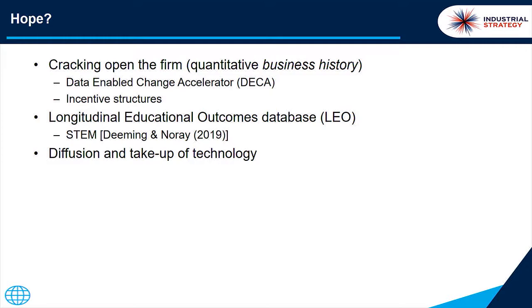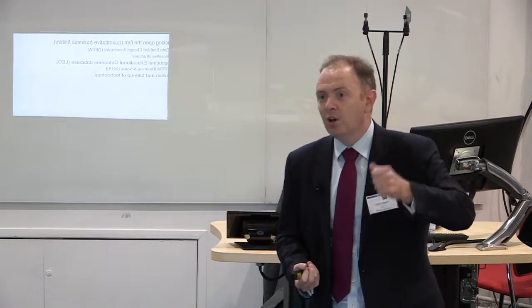This gives us an opportunity to start cracking open what's actually happening at the level of the firm. The first area is something called a Data-Enabled Change Accelerator — it sounds awful, but what it is is HMRC's business-level data: tax records of five million businesses. We're able to link that and work out what actually determines growth. Our prior was that firm-level growth would be largely random — you wouldn't be able to pick winners. We were wrong. When you run the algorithms on it you can find patterns, you can begin to pick winners, and there's a series of factors and characteristics that seem to predict performance.